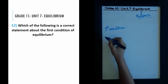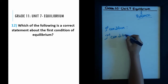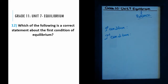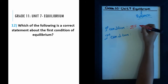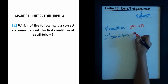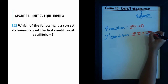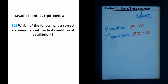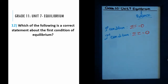We have two conditions for equilibrium — the first and the second. The first condition states that the summation of all forces acting on that body must be equal to zero. The second condition states that the summation of all torques acting on the body must be equal to zero. I'm not saying the forces or torques themselves must be zero — I'm saying when you add all the forces and torques, they must sum to zero.